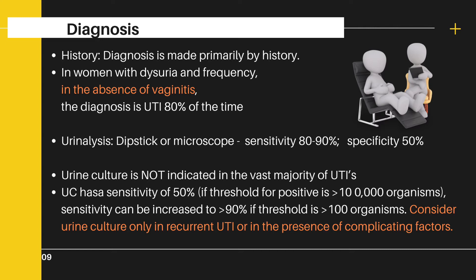Diagnosis is made primarily by history. In women with dysuria and frequency, in the absence of vaginitis, the diagnosis is UTI 80% of the time. This point about the absence of vaginitis is very important — in practice, many young women are repeatedly treated for cystitis when they present with burning micturition, while the actual issue is entirely different: burning while passing urine because the lower vagina and vulva are excoriated owing to itching and irritation caused by vaginal infection.